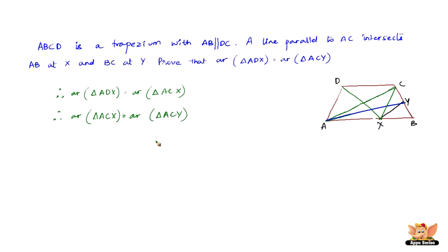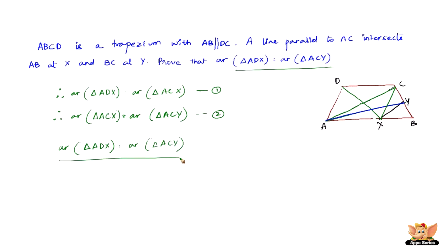Considering these two equations together — equation 1 and equation 2 — we get area of triangle ADX equal to area of triangle ACY, which is exactly what we wanted to prove. This completes the problem.